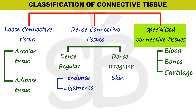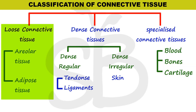Specialized connective tissue includes three examples: bone, cartilage, and blood. In the next video, we will discuss loose connective tissue — areolar and adipose connective tissue — with diagrams.